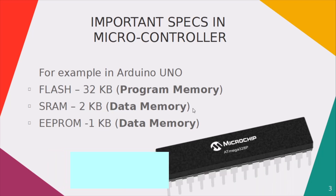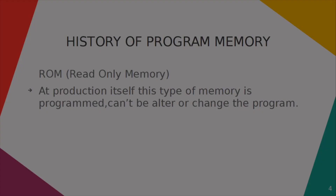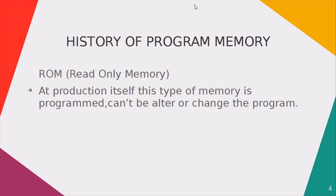This will provide a basic understanding of program memory and data memory. Now we are going to see about the history of program memory. First of all, we are going to see about read-only memory, or ROM. These types of memories were used as program memory in earlier days. These memories actually get programmed at the production time itself — afterwards, we can't alter or change the program.